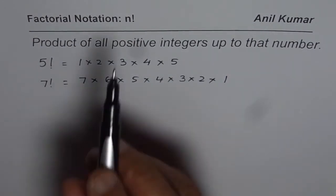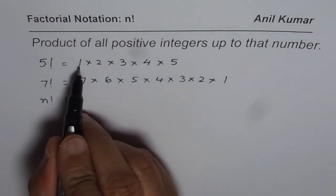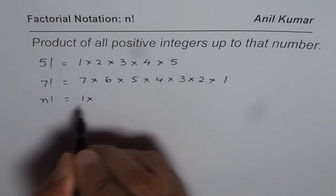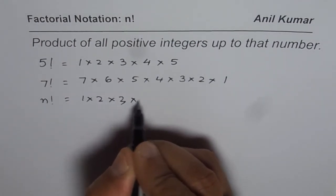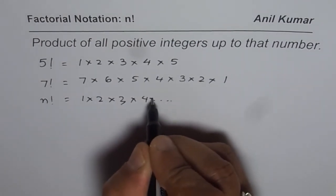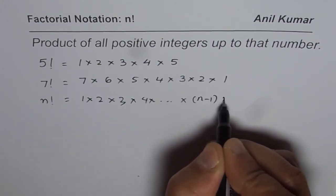In general, if we are writing n factorial, n factorial really means multiply numbers from 1 to n. So 1 times 2 times 3 times 4 times and so on, 1 times n minus 1 times n.